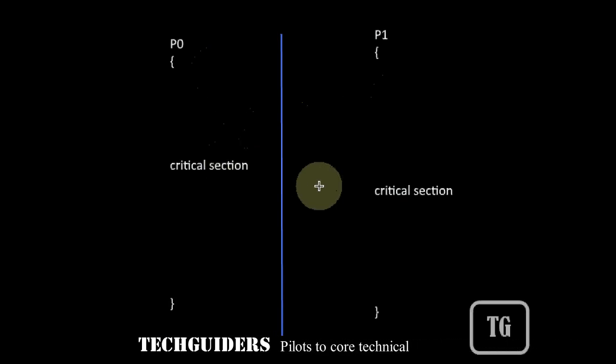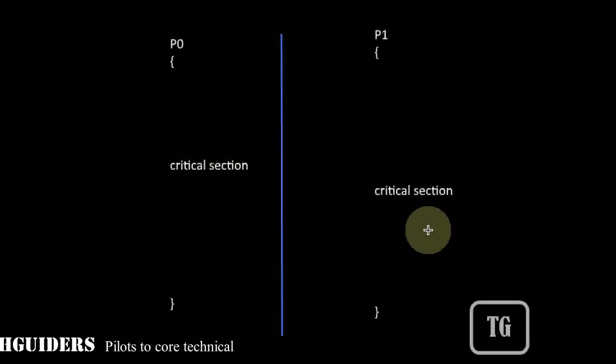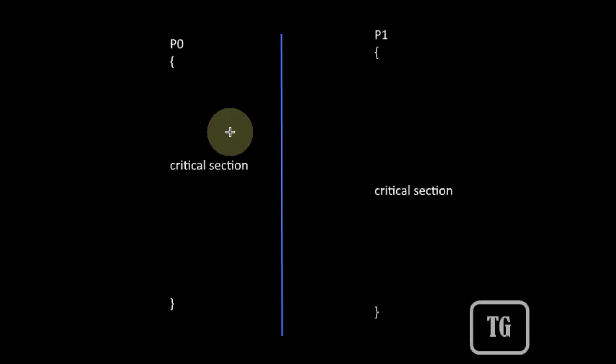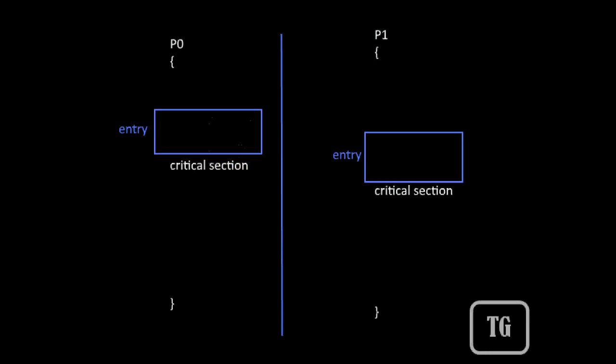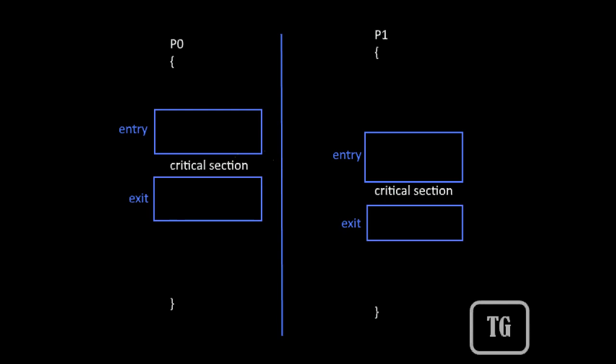Let's discuss some of the algorithms designed to solve the critical section problem involving two processes. If there are two processes and there is a chance for a critical section problem between them, before executing each critical section code the process should execute one piece of code called the entry section, and after completing the critical section the process should execute another piece of code called the exit section.